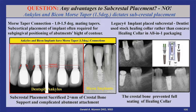Subcrestal placement sacrifices at least two millimeters of crestal bone support and creates an infrabony defect. I've simulated graphically what a more natural emergence profile would look like if an implant with a screw-retained abutment was placed level with the crest of the ridge. This Bicon implant was placed about three millimeters below the crest of the bone.